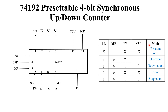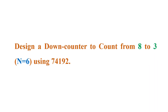This is the mod table of the 74192, just for the sake of recall. Now let us get into the first question: design a down counter to count from 8 to 3, that is n is equal to 6 using 74192.